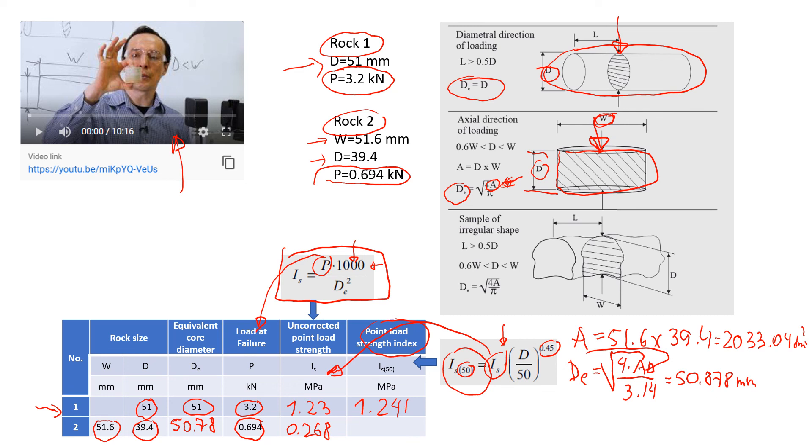I'm going to give numbers here: 1.241, so it's slightly increased. This one is also slightly increased, 0.27. So this is what we record and what we report when we talk about point load index strength.